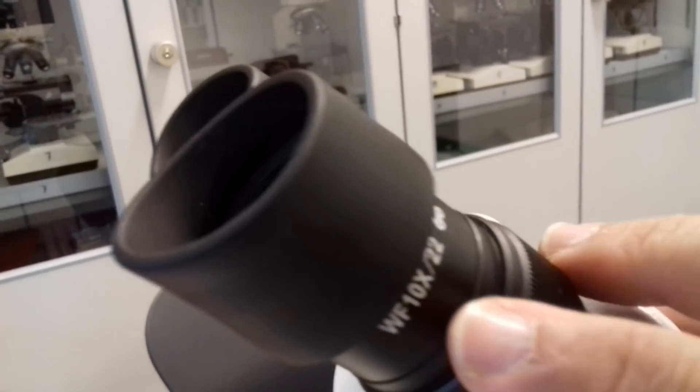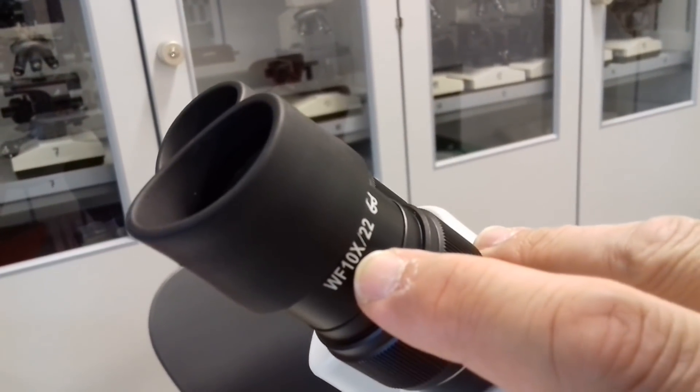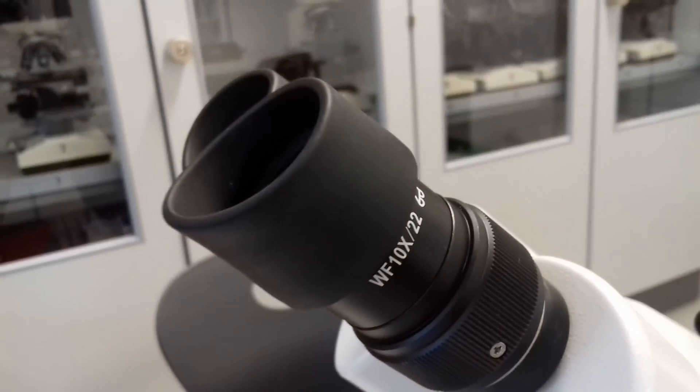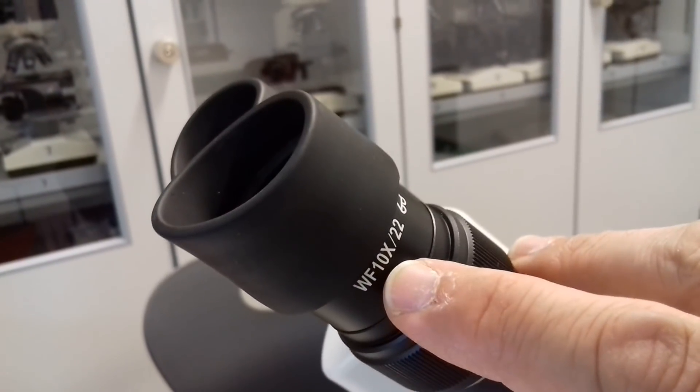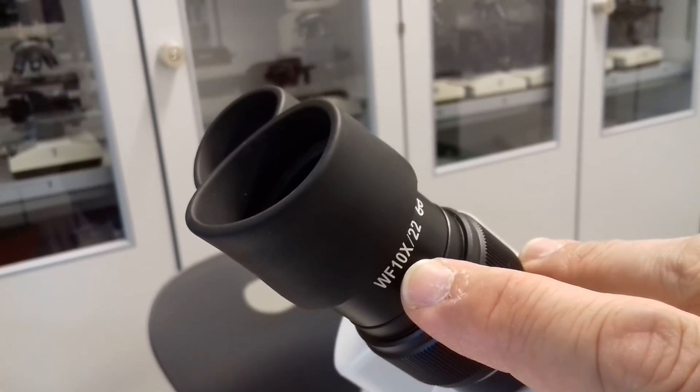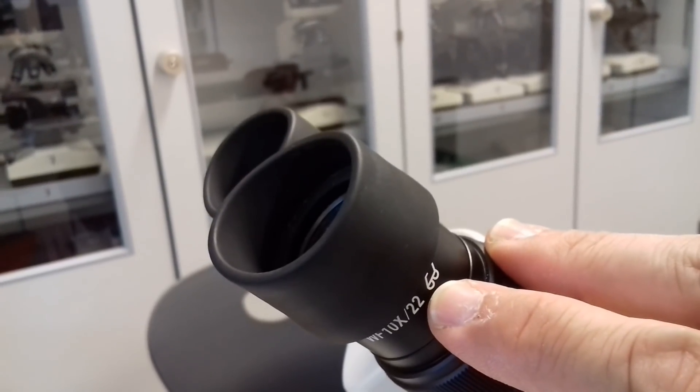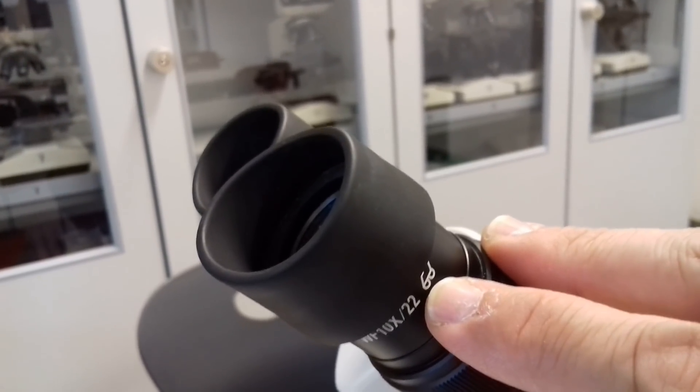So this is a 10 times eyepiece and it says Eurwild field, WF means wide field, 10 times. And then you can also see that there is a number 22 written at the end and this basically tells you how much you're able to see of the object. And it's for eyeglasses, this means you can look through the eyepieces using your eyeglasses on.